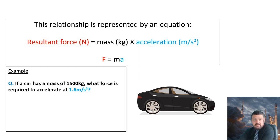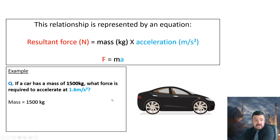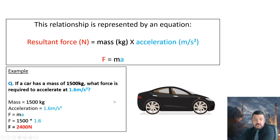I've colour-coded this while we go through these examples to help you pick out what you need. Remember writing your units and identifying them helps you pick out the information. Question one: if a car has a mass of 1500 kilograms, what force is required to accelerate at 1.6 metres per second squared? We identify our information: mass = 1500 kg, acceleration = 1.6 m/s². We write the equation: force equals mass times acceleration. Plugging our numbers in: force equals 1500 times 1.6, which gives us 2400 Newtons. Remember force is always in Newtons.